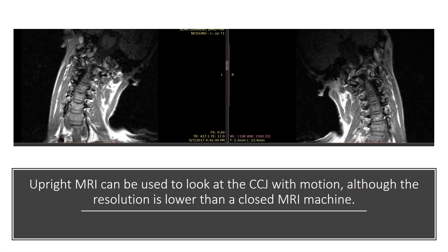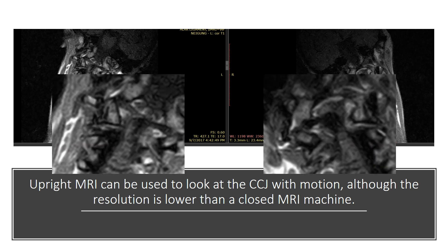An upright MRI can be used to look at the CCJ with motion, although the resolution is lower. Here we've got lateral bending looking at the alar ligaments. You can see the alar ligaments — the resolution isn't great — but you can get some idea of what happens to the relationship between C1 and C2.